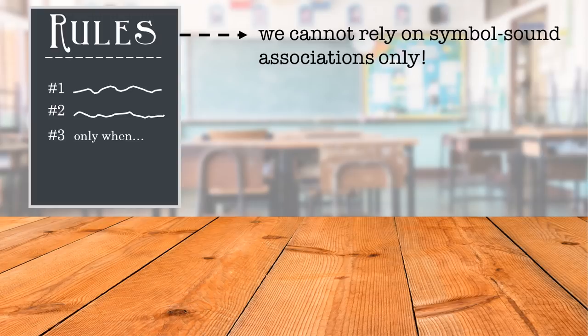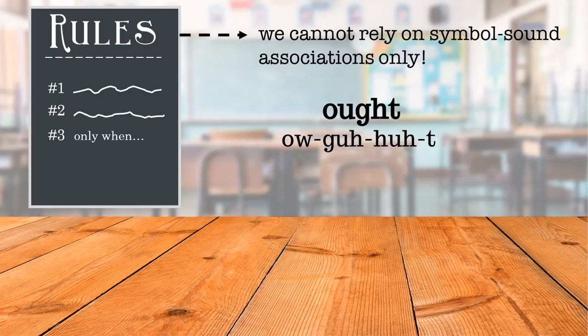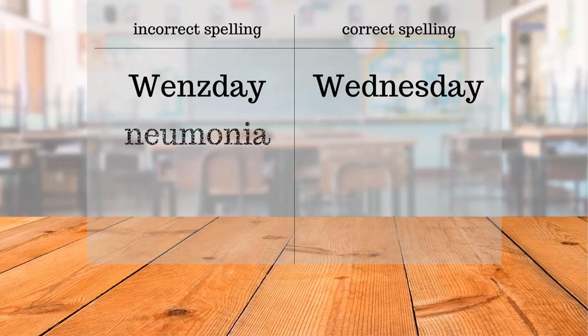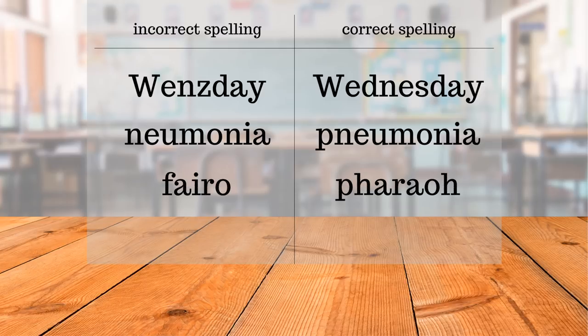Even if we know the rules of a language, we cannot rely on symbol-sound associations only. In English, we learn the rhyme segment 'ought' as in brought, sought, or fought. If we only used symbol-sound associations, we would pronounce 'ought' in different ways. Furthermore, we would spell words incorrectly. 'Wednesday' with a Z seems like a better way to spell Wednesday, and 'pneumonia' without a P seems better than 'pneumonia.' The word for an ancient Egyptian king, a pharaoh, should be spelled F-A-I-R-O, but it is not. This is why orthographic processing skills are also important for reading and writing.